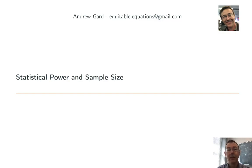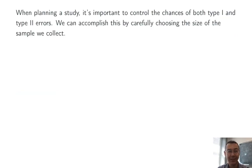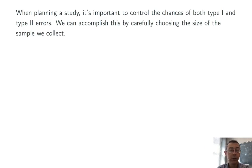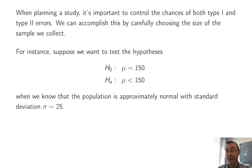Hey everybody. Today we're talking about statistical power and sample size. The basic problem is this: you're planning a research study and you want to control the probability of both a false positive, a type 1 error, and a false negative, a type 2 error. The most intuitive and simple way to do this is by choosing your sample size appropriately. So let's work through an example to get at some of the complexities involved in this question.